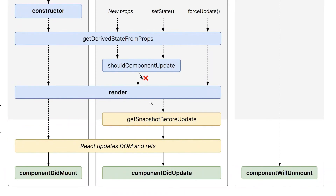getSnapshotBeforeUpdate is actually working in conjunction with componentDidUpdate. How it is working: it works just after render, so it is actually getting a snapshot of the DOM which we are going to apply on the UI, and it gives instructions to componentDidUpdate to manage the UI before the actual update happens.